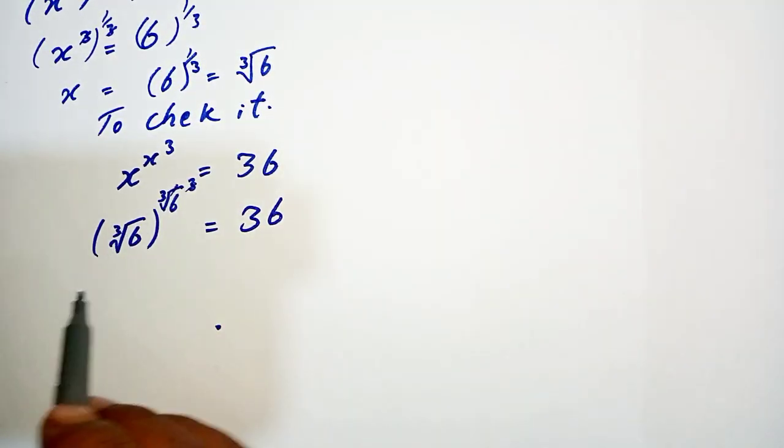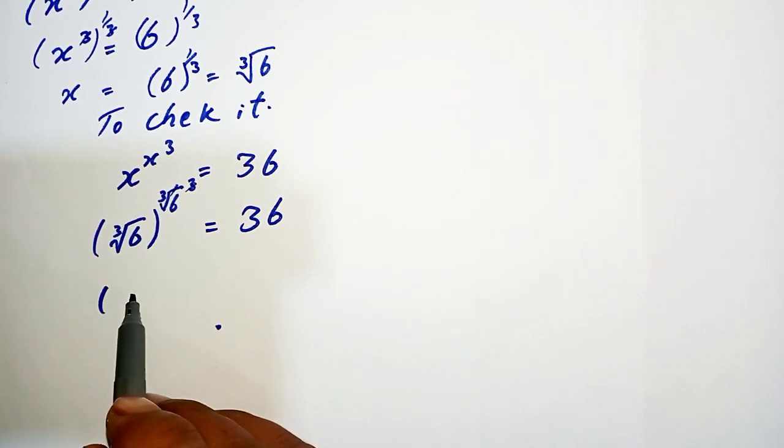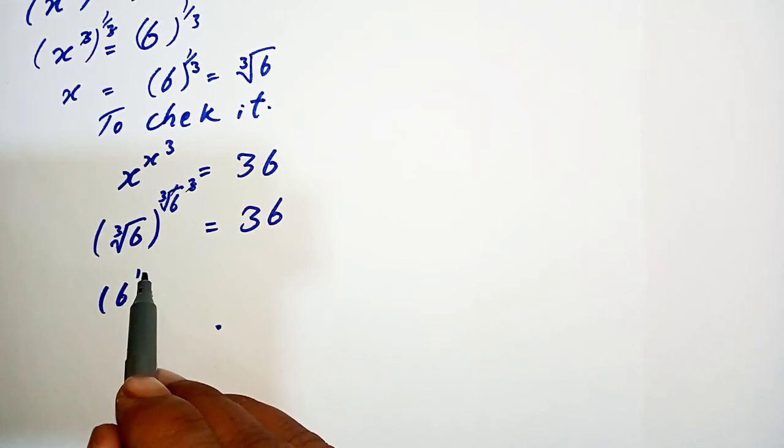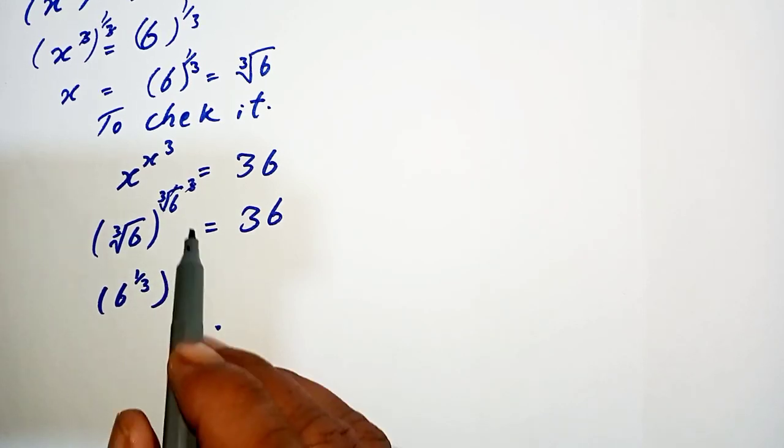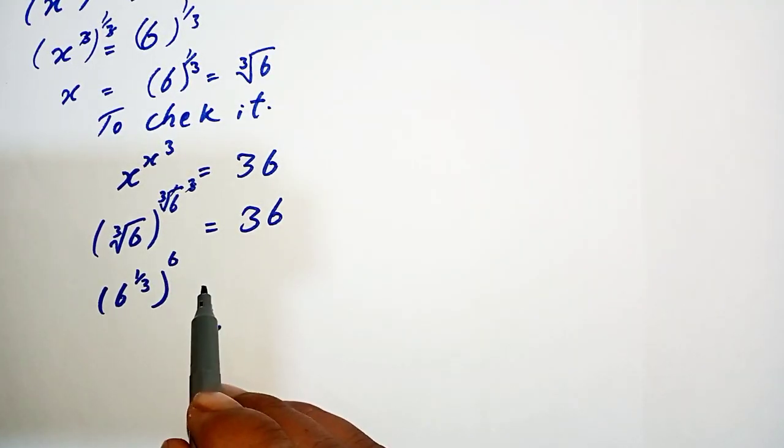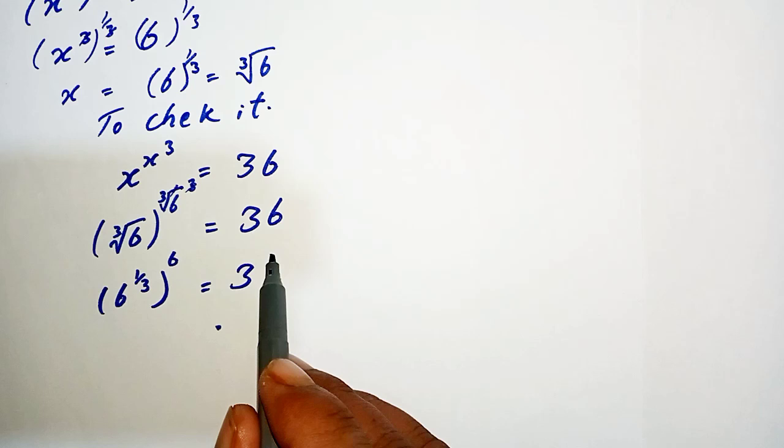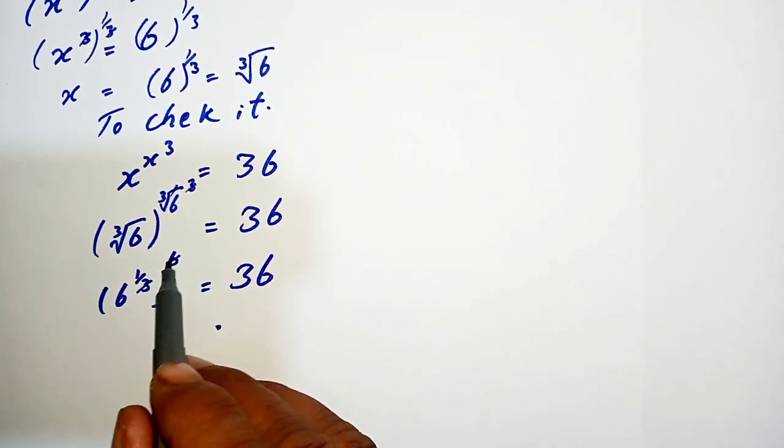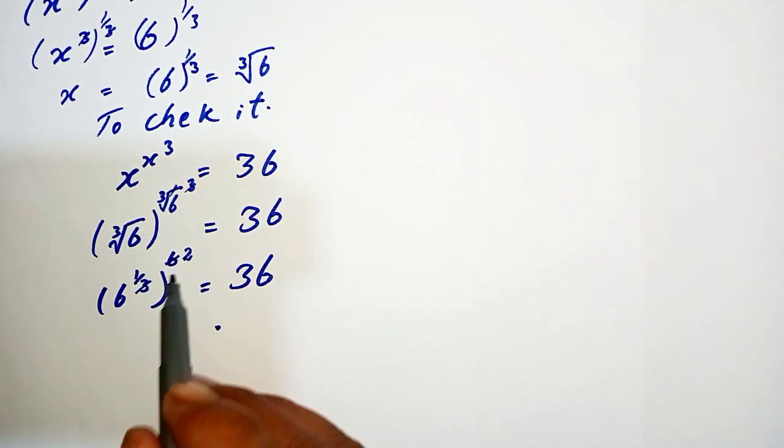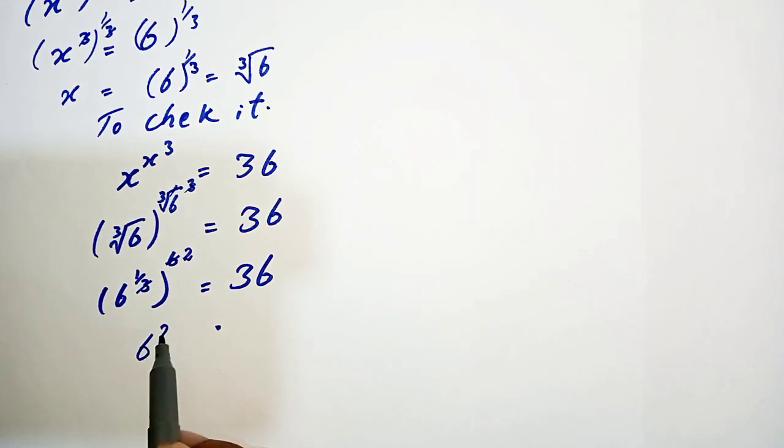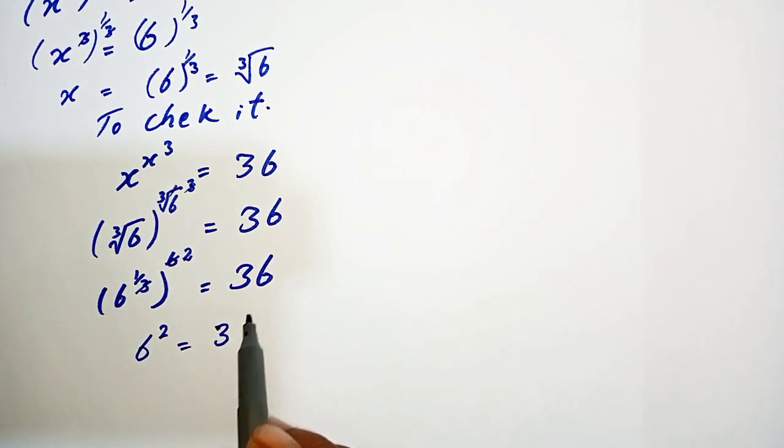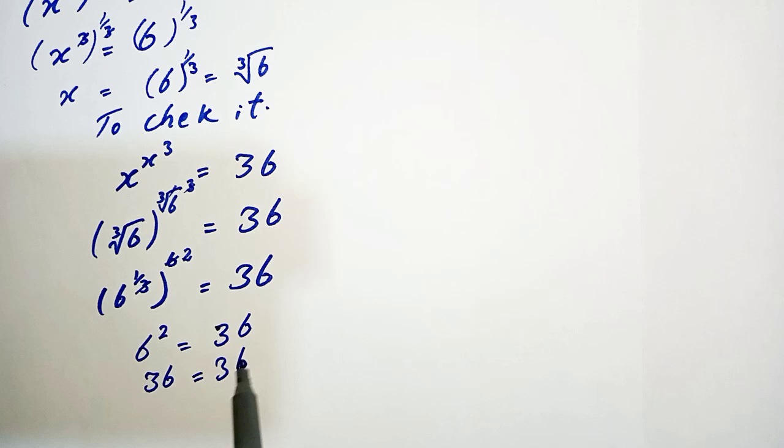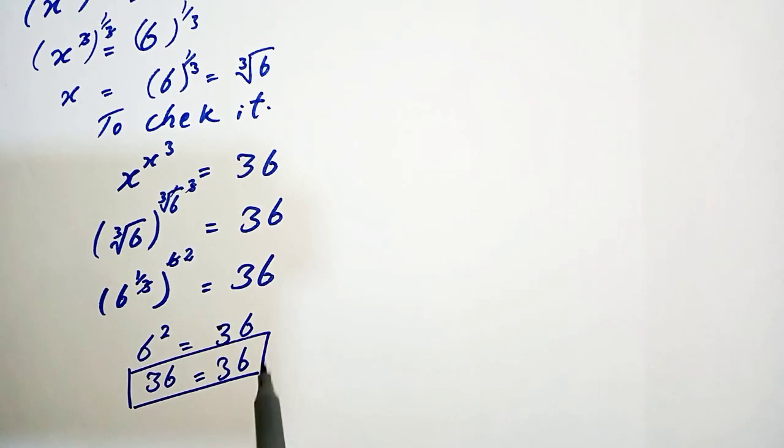This 3 will cancel this cube root after 1, or (6^(1/3))^6 = 36. This 3 will cancel this 6; it becomes 6^2 = 36. Now 6^2 would be equal to 36, which is equal to the right-hand side, so our answer is true.